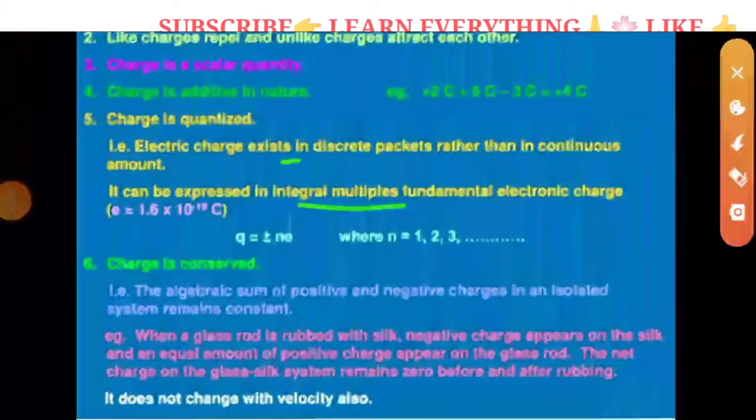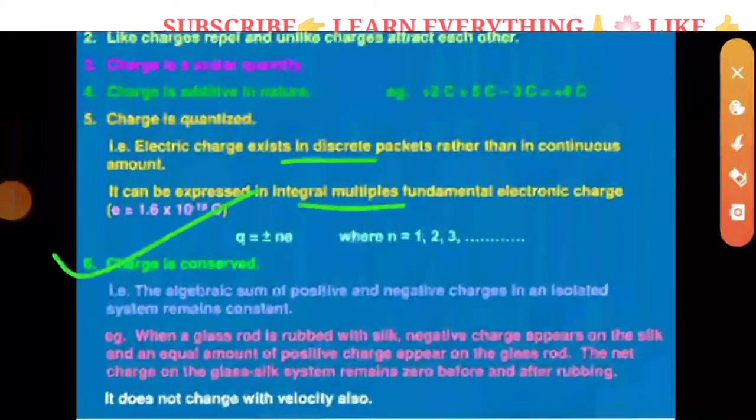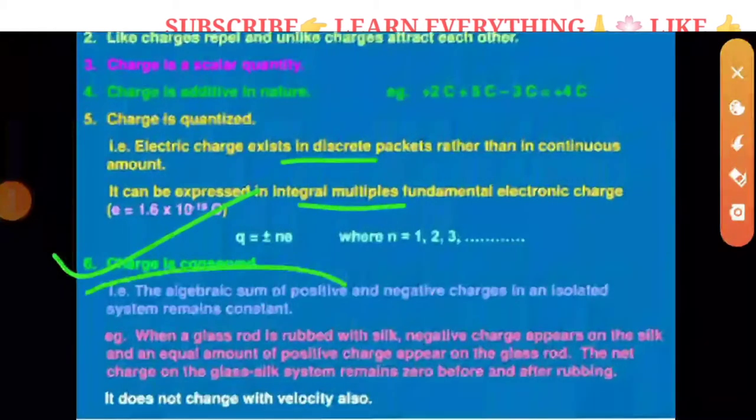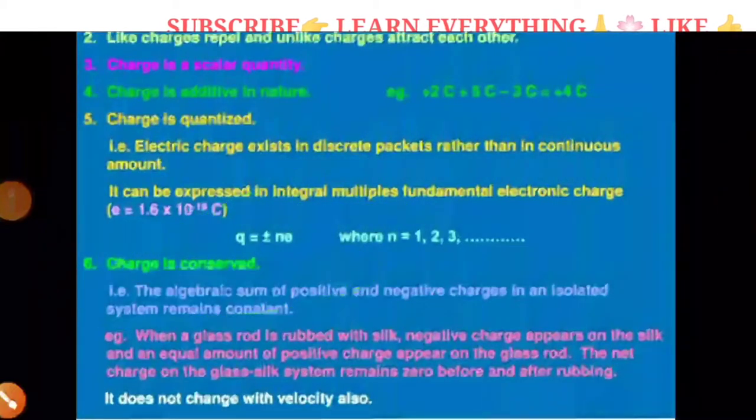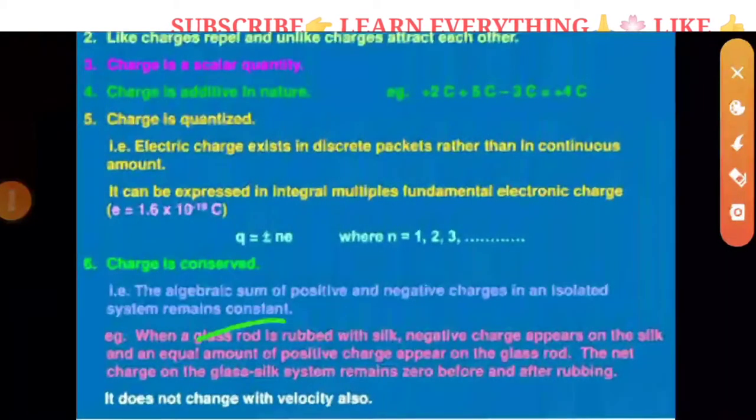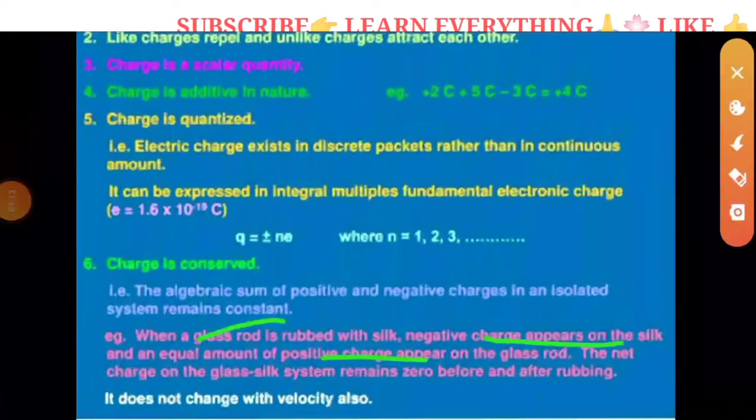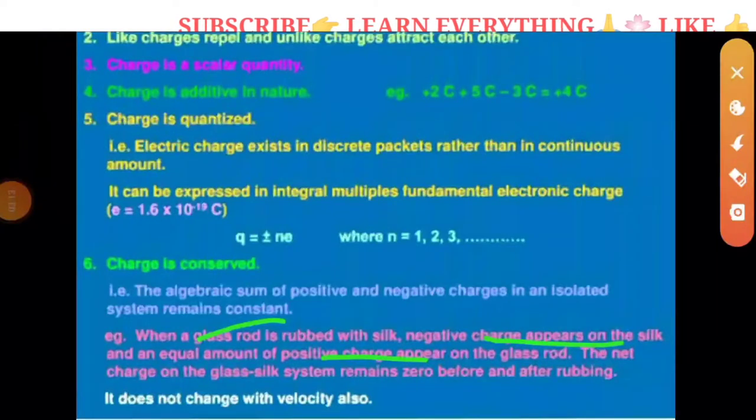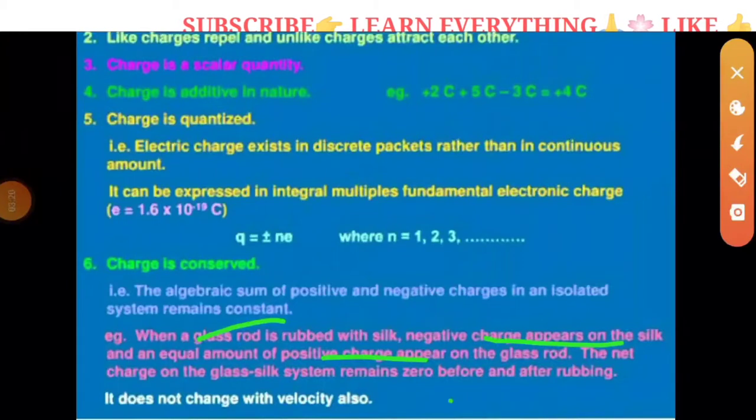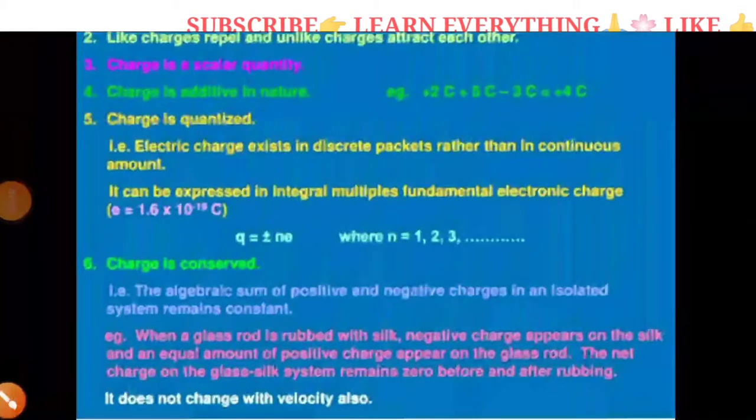Conserved - the algebraic sum of positive and negative charge in an isolated system is constant. When a glass rod is rubbed with silk, the negative charge appears on the silk. So the net charge of the system is zero before rubbing and after rubbing. This is conserved. It does not change with velocity also.